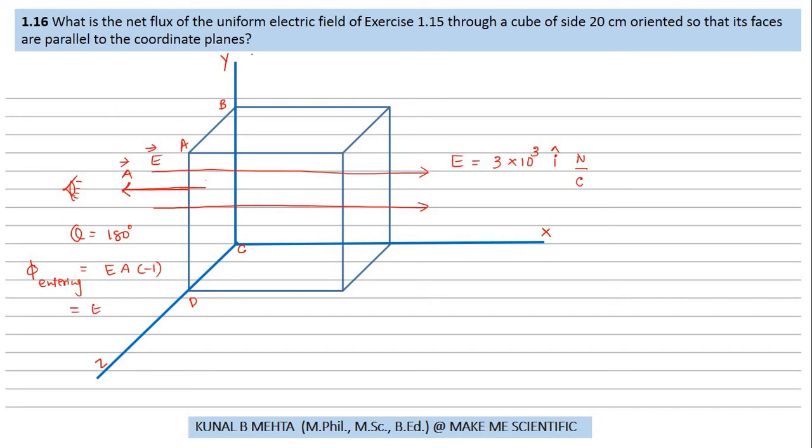This is the flux which is entering. When the observer is over here, the area vector would be, let me call this ABCD, then EFGH. So these are our only two faces which are responsible for the contribution of flux.